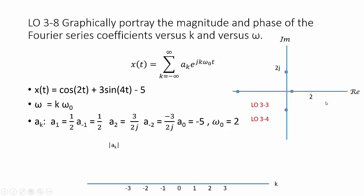We can plot all those a sub k in the complex plane. For k equals 1, a sub 1 has a value of one half on the real axis, one half unit from the origin, so its magnitude is one half. The same is true for k equals negative 1, which has the same value. a sub 2 has a value of negative 3 halves j; bringing j to the numerator gives it a negative sign, placing it at this point on the negative imaginary axis. The distance from that point to the origin is 3 halves — that is its magnitude.